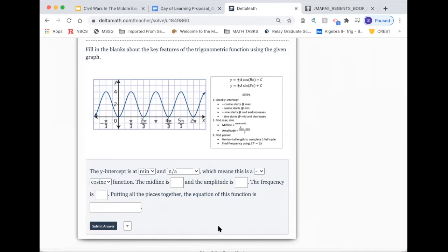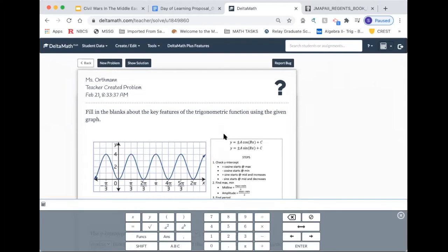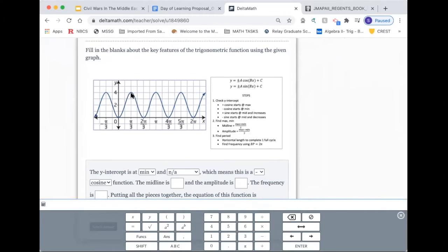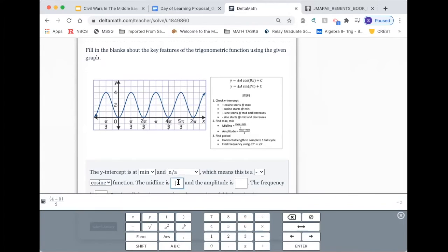Now let's calculate the midline. For finding midline, we need to take the maximum plus minimum and then divide it by 2. Let me use my calculator. Maximum is 4, minimum is 0. So 4 plus 0 is 4, and then divide it by 2, which gives me 2. So midline is 2.